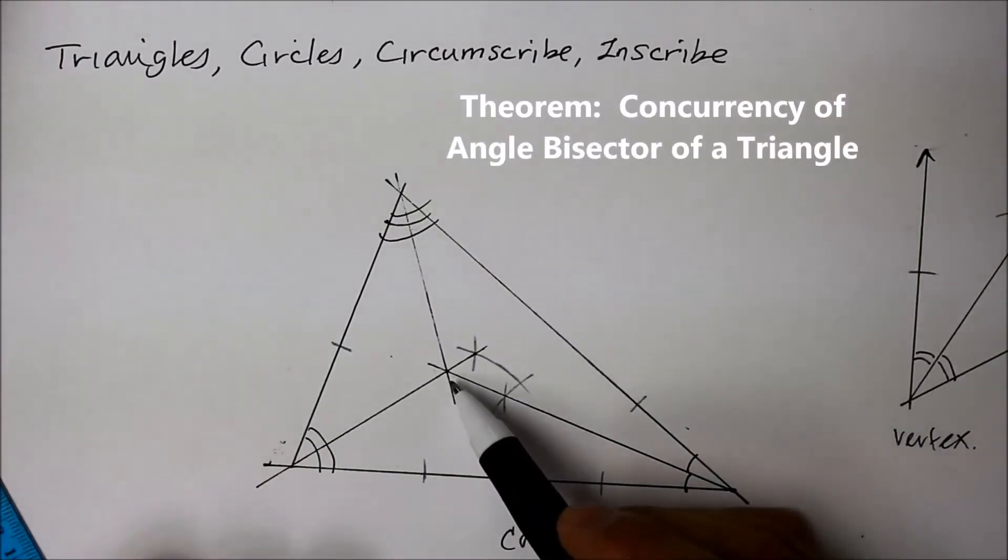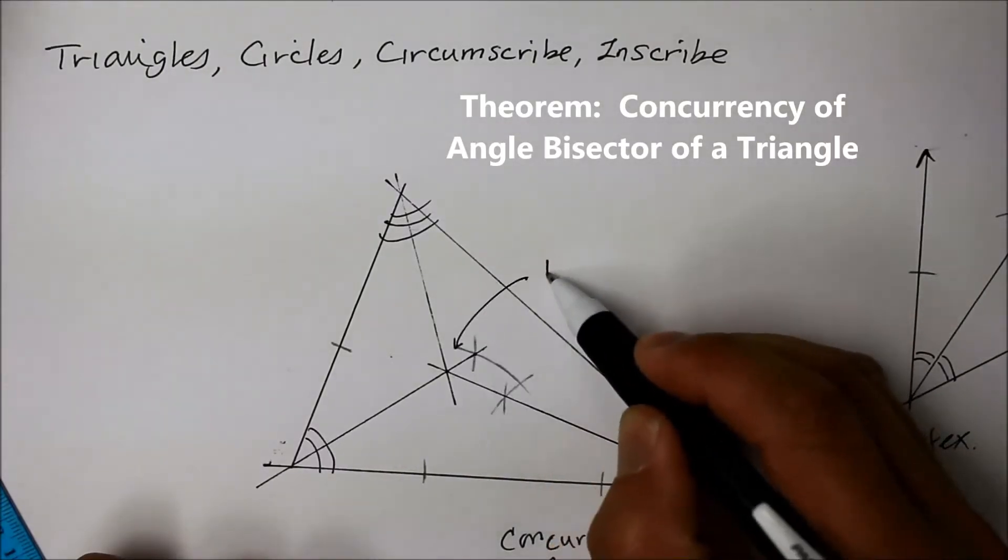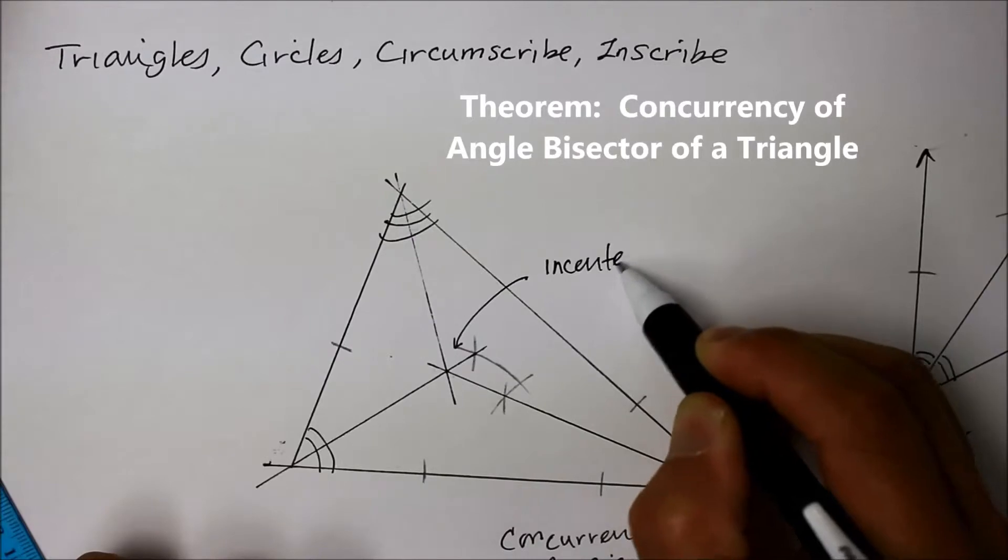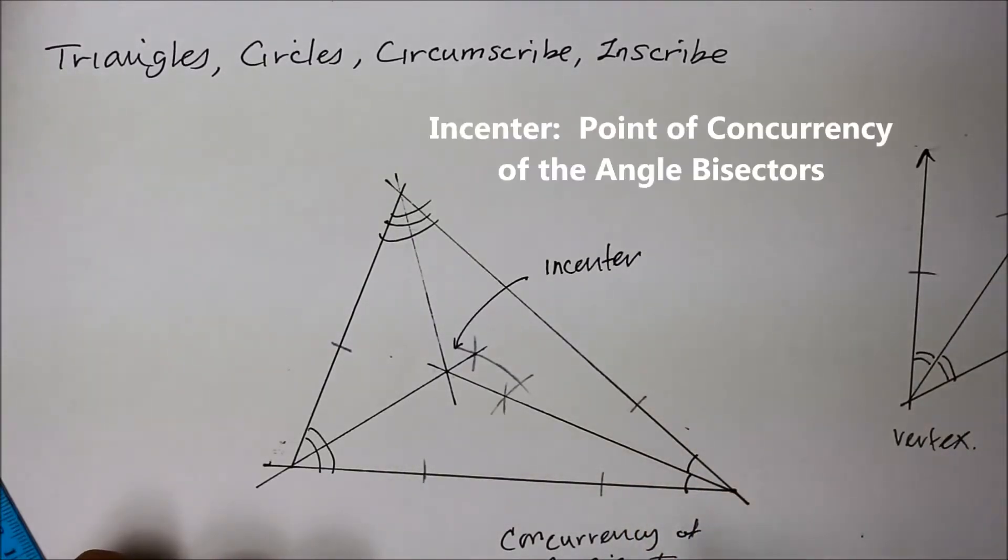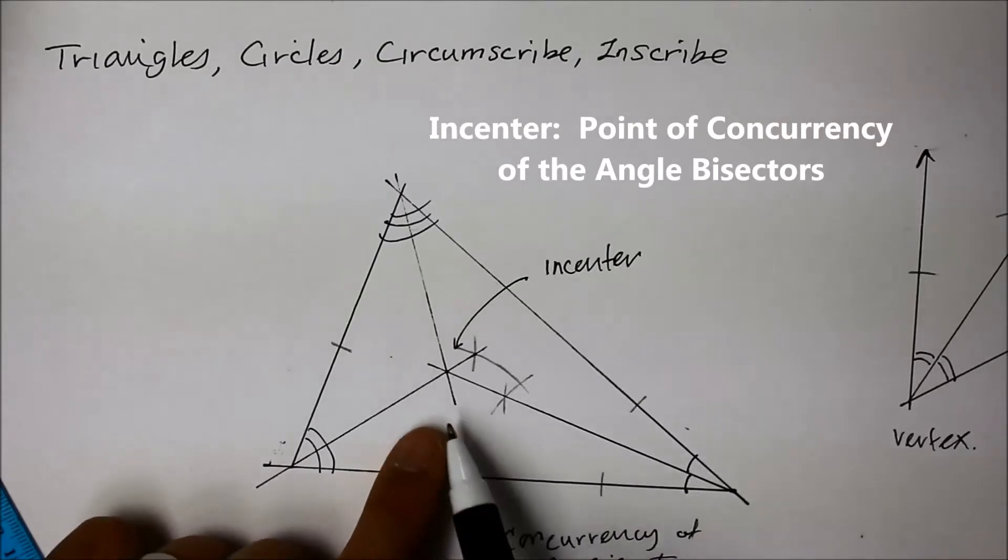And where the three angle bisectors intersect, that point is considered an incenter. Incenter is the point of the intersection where the three concurrent angle bisectors come together.